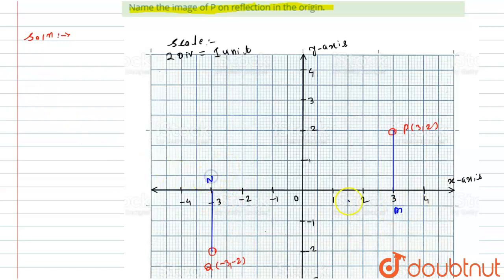Give the perpendicular feet the names M and N. Now if I try to give the coordinates for points M and N — point M is lying onto the x-axis, so its y-coordinate will become 0. Hence its coordinate will be (3, 0). Similarly for N, it will be (-3, 0) because it is also lying onto the x-axis, so that y-coordinate will become 0.